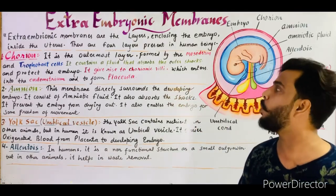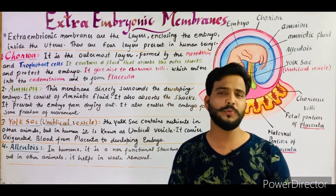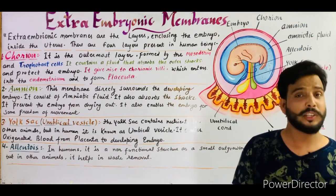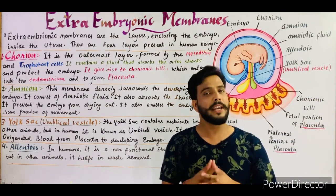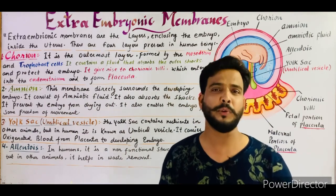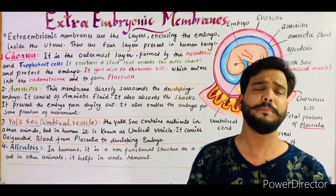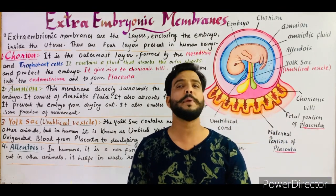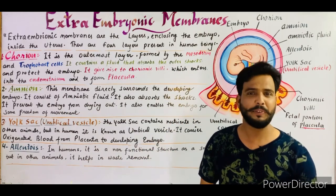That covers all four extra embryonic membranes: chorion, amnion, umbilical vesicle (yolk sac), and allantois. If you have any questions, please ask in the comment section. In the next lecture I will start a new and important topic — please comment to let me know which topic you'd like to see. Thanks for watching, have a good day.